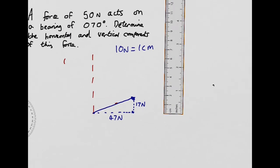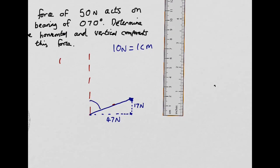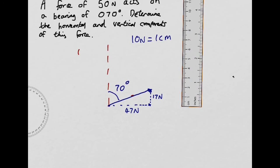So there we go. I've split this, by the way, is 70 degrees because it's 070 bearing. So I've determined the horizontal component, which is 47, and I've determined the vertical component, which is 17 newtons. Hopefully, by the time you watch this, I will have put a question sheet at the bottom with an answer sheet as well to go with it for you to have a go at. I'll see you in the next video.